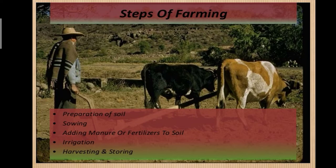This is the old method of farming that is still used in some areas. The steps include preparation of the soil, then sowing of the seeds, adding manure or fertilizer to the soil, proper irrigation, and then harvesting and storing.